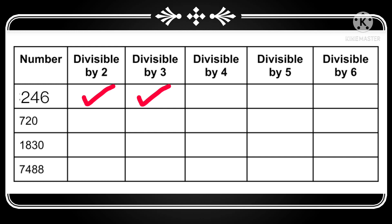Now, to check divisibility by 4, let's take the last two digits: 46. Since 46 is not divisible by 4, the number is not divisible by 4. For 5, since the digit at the 1's place is neither 5 nor 0, it is not divisible by 5. To check divisibility by 6 — since 246 is divisible by both 2 and 3, it is also divisible by 6.